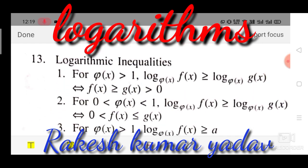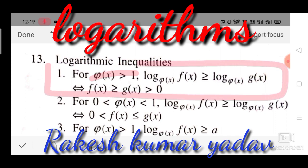Now logarithmic inequalities. For a function φ(x) greater than 1: if log(f(x)) to the base φ(x) is greater than or equal to log(g(x)) to the base φ(x), this implies that g(x) lies between f(x) and 0, and f(x) is greater than or equal to g(x) with g(x) greater than zero.